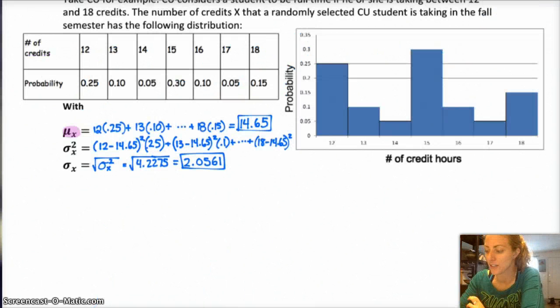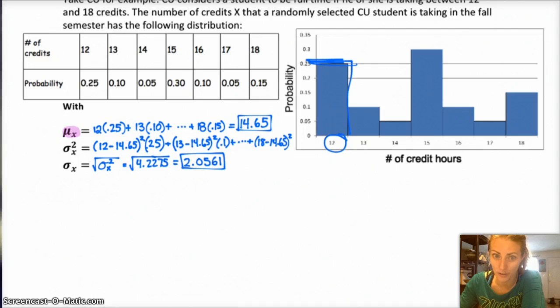Just so that you can distinguish between the different random variables and later that it'll help with notation. And, this is a graph of the distribution of the credit hours, right? So, 12 credit hours, you have 0.25 or 25% of full-time students taking 12 credit hours. You have 10% of full-time students taking 13 credit hours and so on, right?